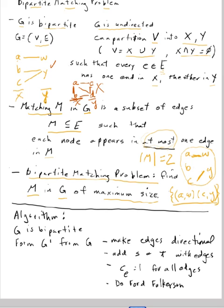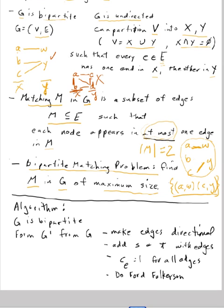Okay, so in order to solve this problem, here's the algorithm right here. First of all, G is a bipartite graph, so that's our starting place right there. So, step one, basically step one is right here. Form a new graph, G prime, from the original G. And we do that by making the edges directional going from X to Y.